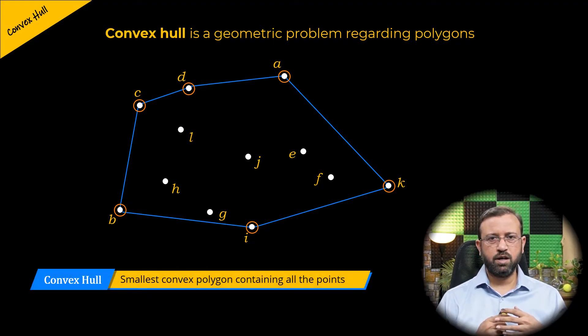The convex hull of a set of points in a plane is the smallest convex polygon that contains all the points.